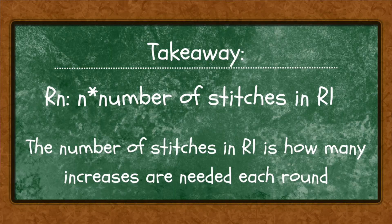Here is the big takeaway for how to do your increases: regardless of whether you're working more or fewer than the correct number of stitches, you want to increase by the same amount every round. The amount you increase by is the number of stitches you used in round one. We now understand it's possible to make a flat circle using the wrong number of stitches, how to do our increasing, but we still need the correct hook and yarn combination to make it lie flat.